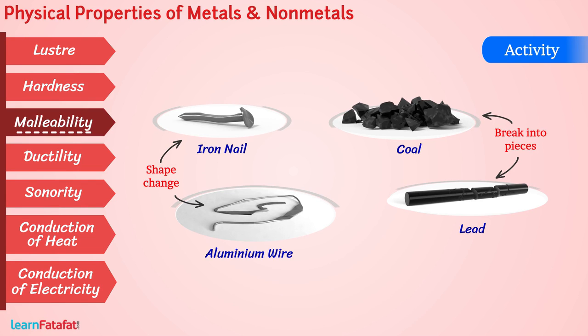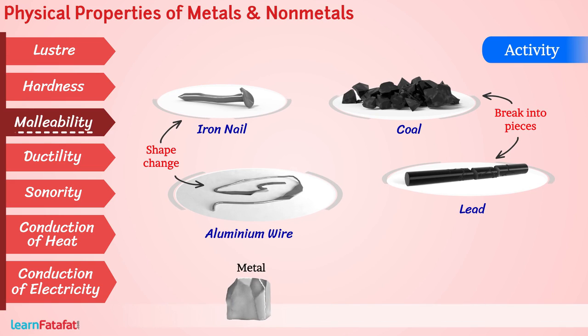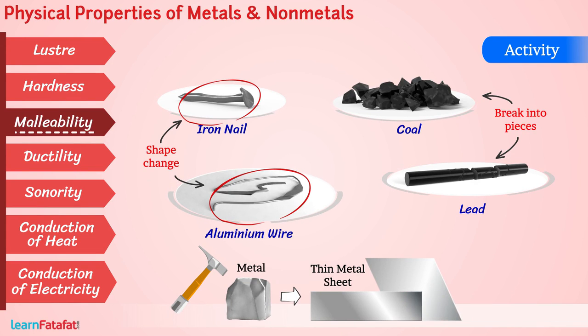The harder we beat, the greater the change of shape. Thus, metals change their shape and form thin sheets when beaten. This property is called malleability. Non-metals break into pieces, as we have seen in the activity.